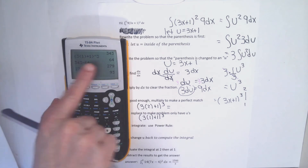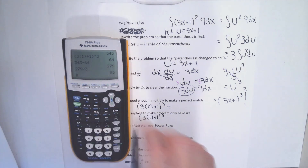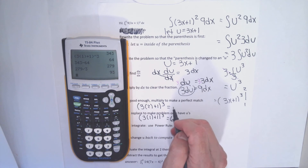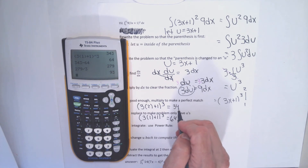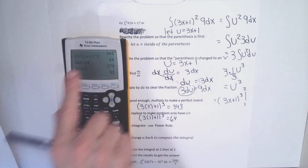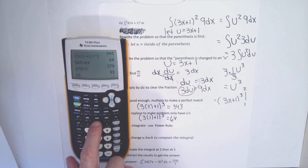3 times 1 plus 1 cubed is 64 — we did that on the last problem — and 3 times 2 plus 1 cubed is 343.